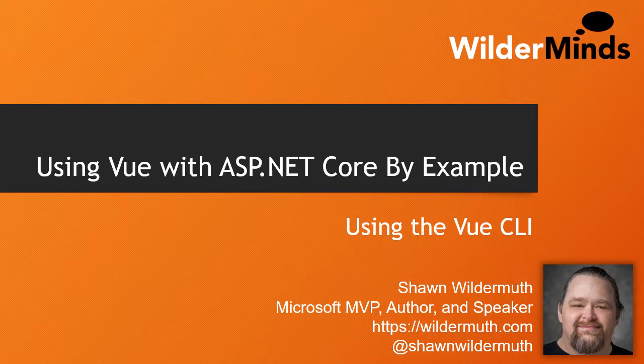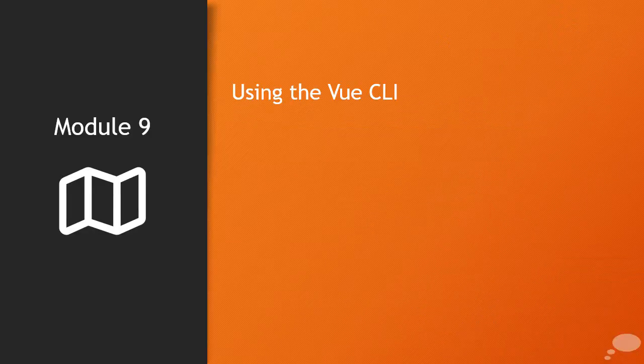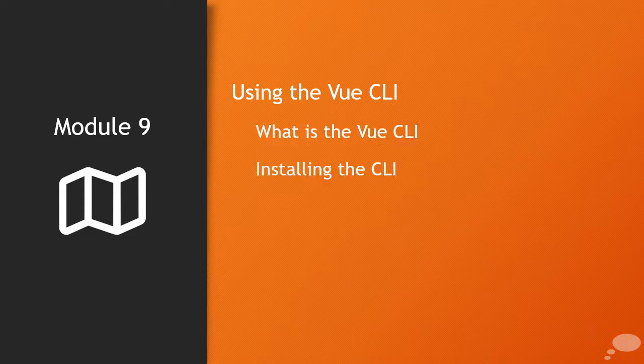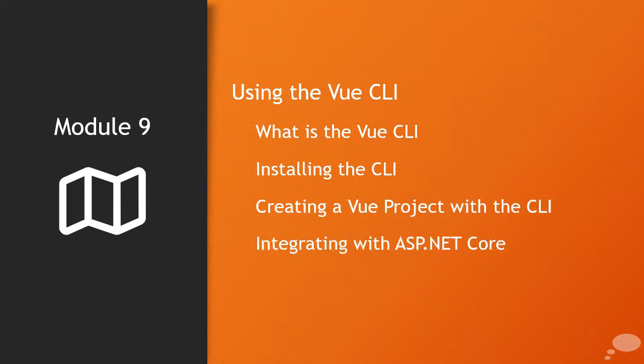In this next module, let's talk about using the Vue CLI. The Vue CLI is a command line interface that is optionally used when you want to build Vue applications. We're going to talk about using the Vue CLI — I'll show you what it is, explain how to install it, create a new Vue project using the CLI, integrate that project with ASP.NET Core, and show you using multiple pages with the Vue CLI.